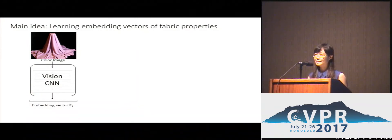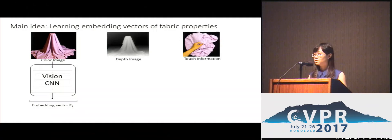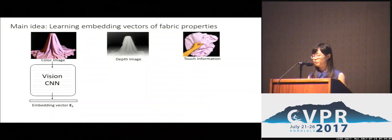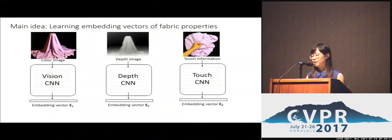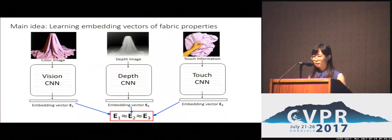To address this question, we designed a neural network to extract embedding vectors from input images. We expect the embedding vectors to be a good representation of the material properties. We also have other modalities: depth images of the fabric drapings, which are easier for the computer to understand because we remove interference from color and illumination. We also have touch information, so we have two separate convolutional neural networks for them to extract embedding vectors. Even though the inputs come from different modalities, they are from the same fabric, so their embedding vectors should be very similar.